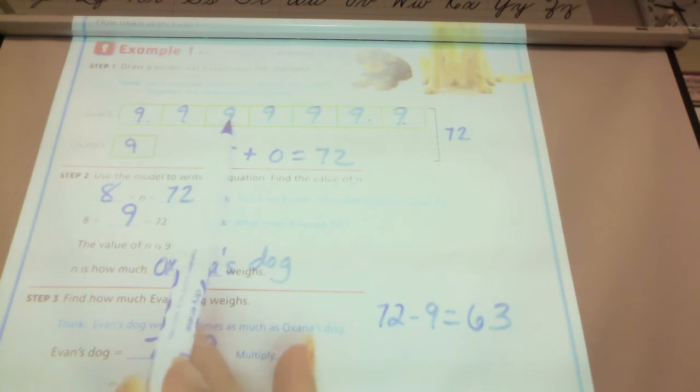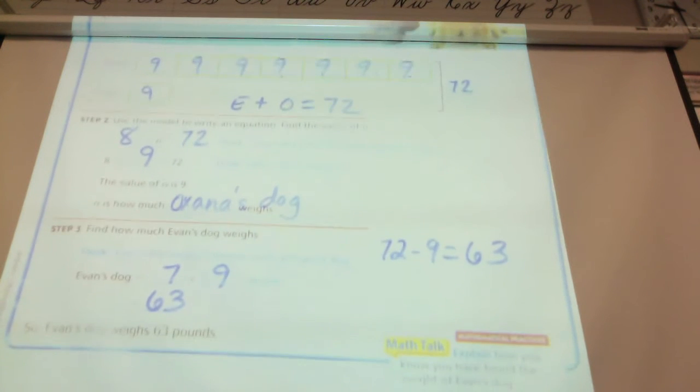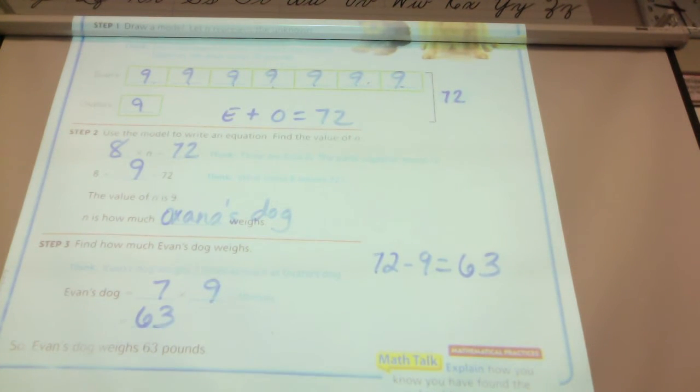1, 2, 3, 4, 5, 6, 7. 7 times 9 would give me the weight. 7 times 9 is 63. So, the dog weighs, Evan's dog weighs 63 and Oksana's weighs 9.